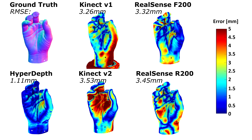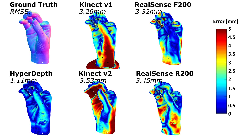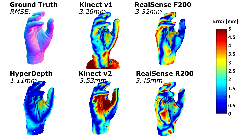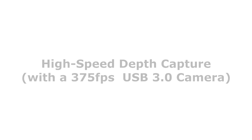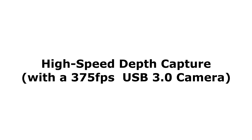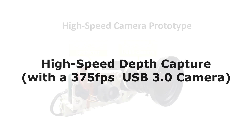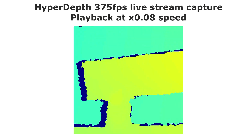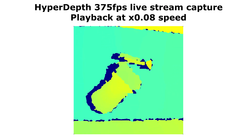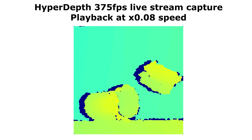However, apart from producing high quality depth maps, we are also able to very efficiently compute depth. We have a GPU implementation that can run at over a kilohertz and a prototype camera system that can run at 375 frames per second.